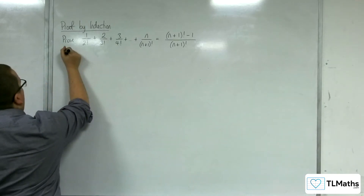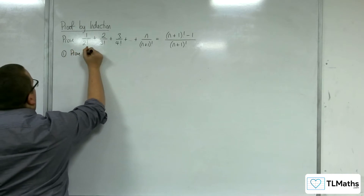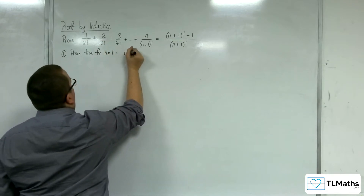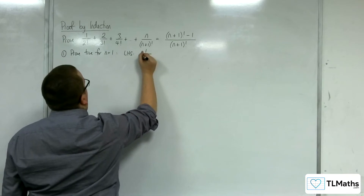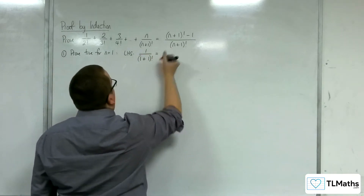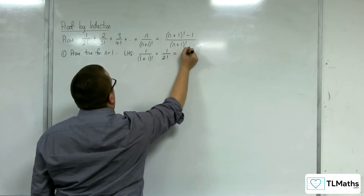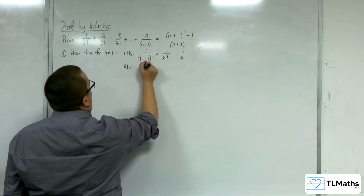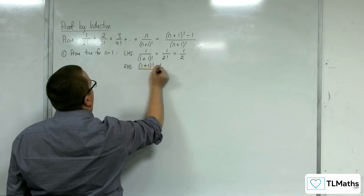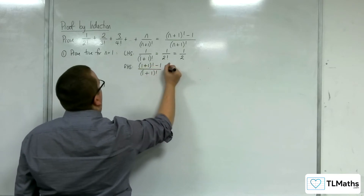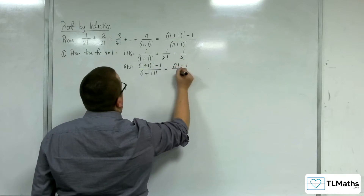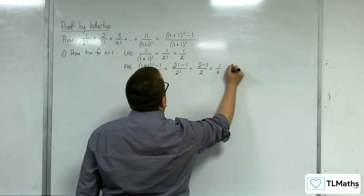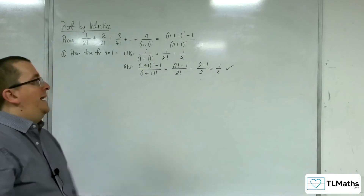Step 1: prove it is true for n equals 1. The left hand side would be 1 over 1 plus 1 factorial, so that's 1 over 2 factorial, which is 1 over 2. The right hand side would be 1 plus 1 factorial take away 1 over 1 plus 1 factorial, so that's 2 factorial take away 1 over 2 factorial, which is 2 take away 1 over 2, which is 1 half. So the left hand side equals the right hand side, and it is true for n equals 1.